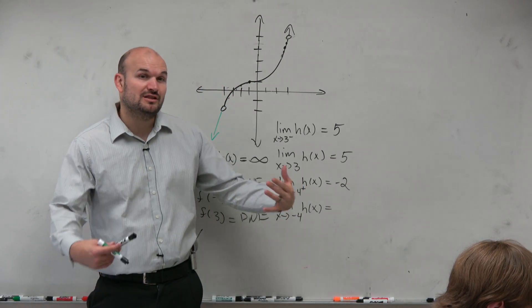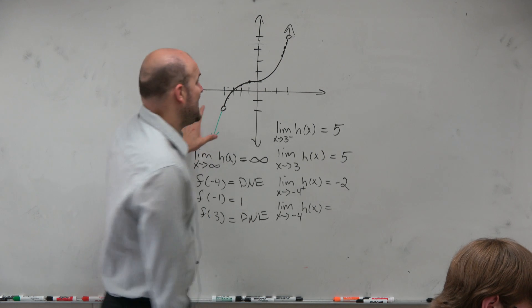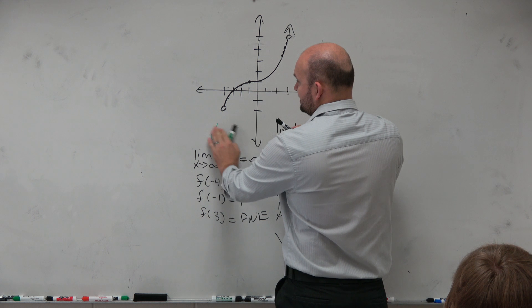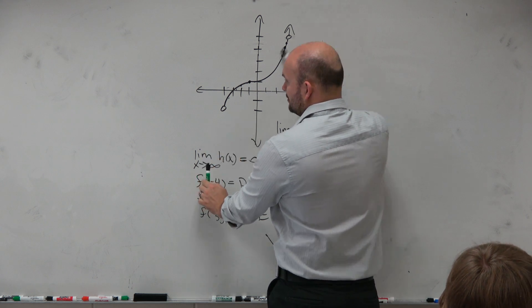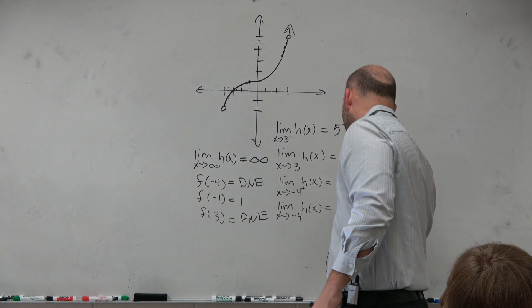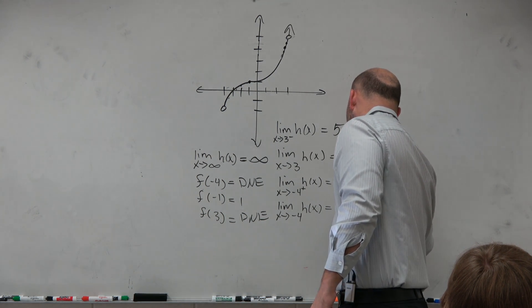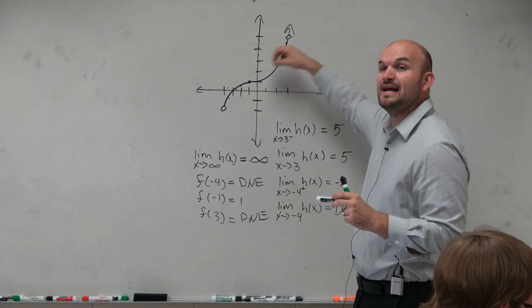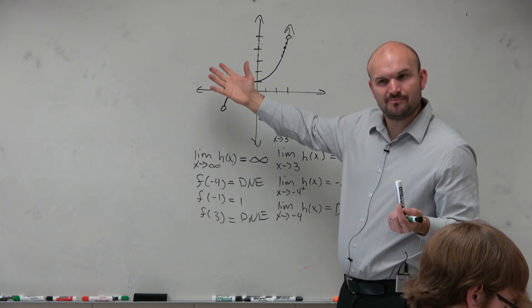So remember, for the general limit to exist, the left hand has to equal the right hand. You have to come from it from both directions. Well, since this doesn't even exist, you can't come from it from both directions, right? So therefore, the limit of negative 4 does not exist. So the only limit that exists at negative 4 is the right hand limit, because that's kind of like an end point.